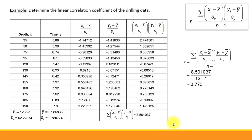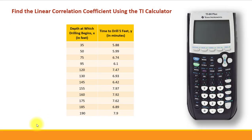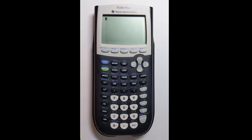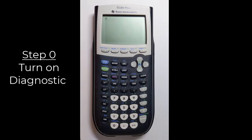As you'd agree, that process is pretty time-consuming and tedious. The good news is we can find the correlation coefficient using a calculator, which takes much less time. Let me show you how to find the linear correlation coefficient using the TI calculator using the same example so we can compare results. The first step — call it step zero — is something you only need to do once: turn on diagnostics. If you skip this, r will simply not show up.